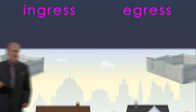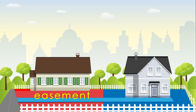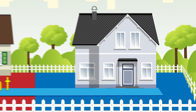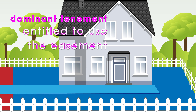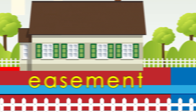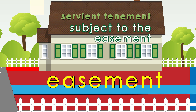An easement creates a tenement relationship between two parcels of real estate, since it benefits one property, referred to as the dominant tenement, whose owner is entitled to use the easement, and burdens another property, referred to as the servient tenement, the owner's use of which is subject to the easement.